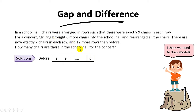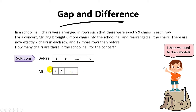Mr Ong is going to bring in six more chairs, so let's add a six behind. Now Mr Ong is going to rearrange the chairs in rows of seven. Each row now has seven, so obviously seven is shorter than nine — that's why this model is shorter. We still have the dot because we do not know the number of rows.